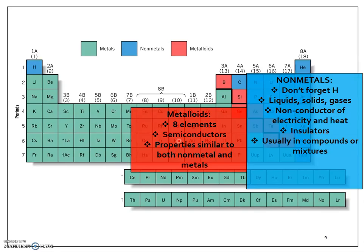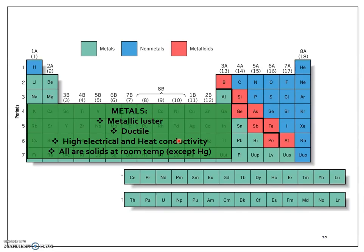The metalloids, and there are eight elements shown here, are semiconductors. So that means they do conduct electricity and heat. However, they do not conduct it very well. So they have properties similar to nonmetals and metals. They can be slightly metallic colored and shiny, but not always.